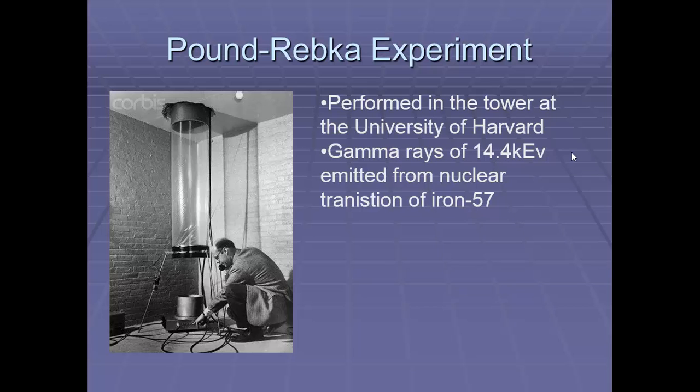they had gamma rays of 14.4 kiloelectron volts emitted from a nuclear transition of iron-57. As it turns out, they went from the top emitting to the bottom, so they actually detected blue shifting. And it was detected at a base 22.6 meters from the top of the tower.